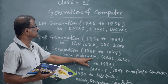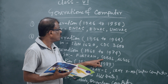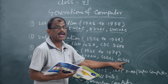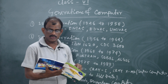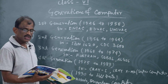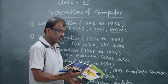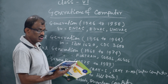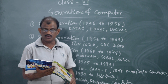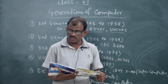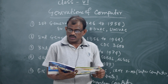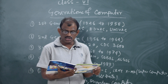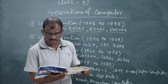FORTRAN is Formula Translation Language. COBOL is Common Business-Oriented Language. ALGOL is Algorithmic Language. Third generation computers include IBM 360, PDP — Personal Data Processor, and TDC 316.